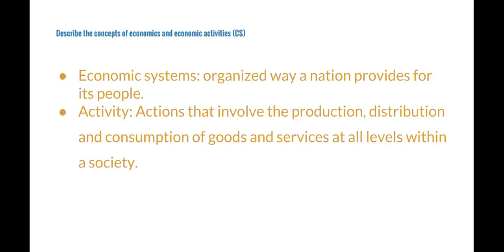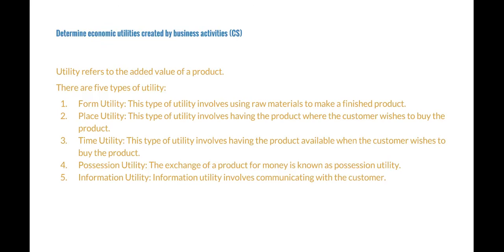The next performance indicator is to determine economic utilities created by business activities. Utility basically means the added value of a product — when something has a type of utility, it's adding that type of value when you purchase it. The five types of utility a product can give you are form, place, time, and possession. Form utility involves using raw materials to make a finished product, so you get the product in a different form than the raw materials, and that's why it creates form value or utility.